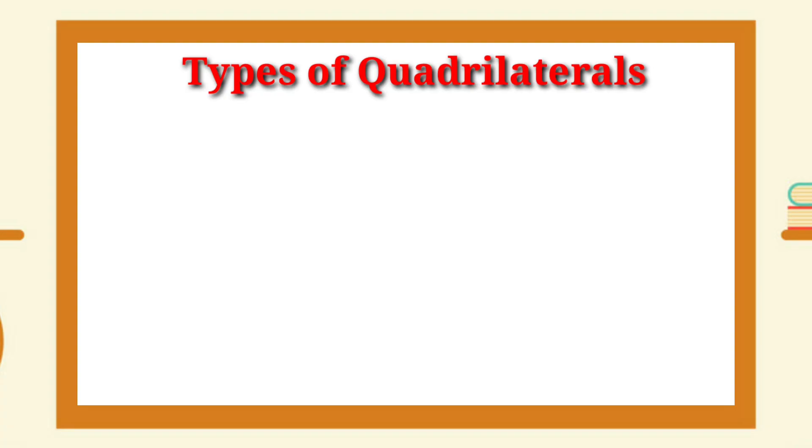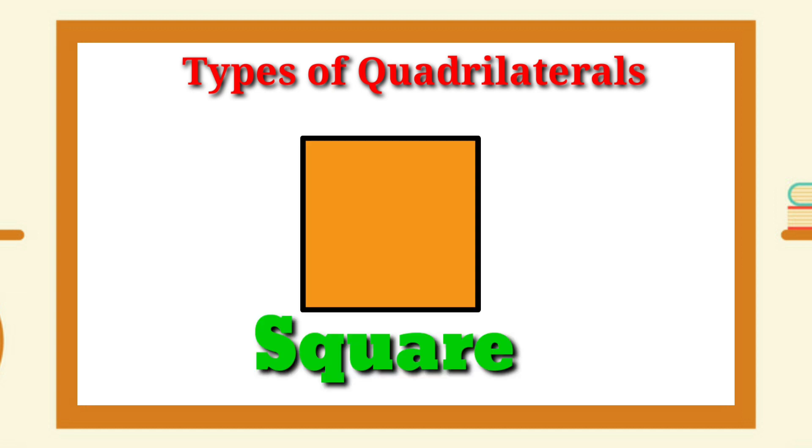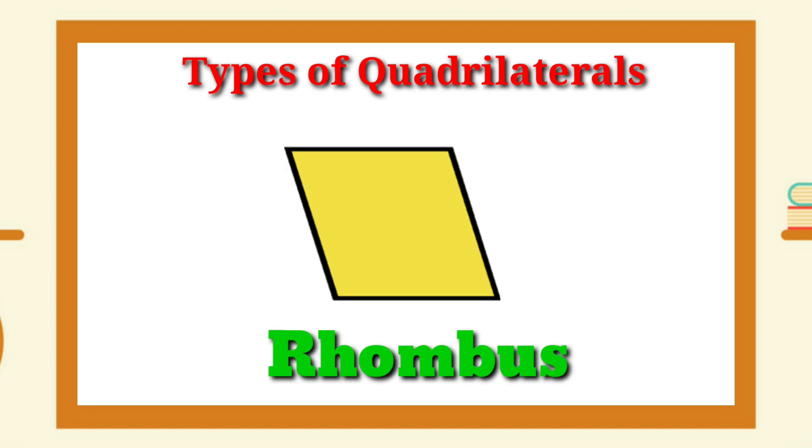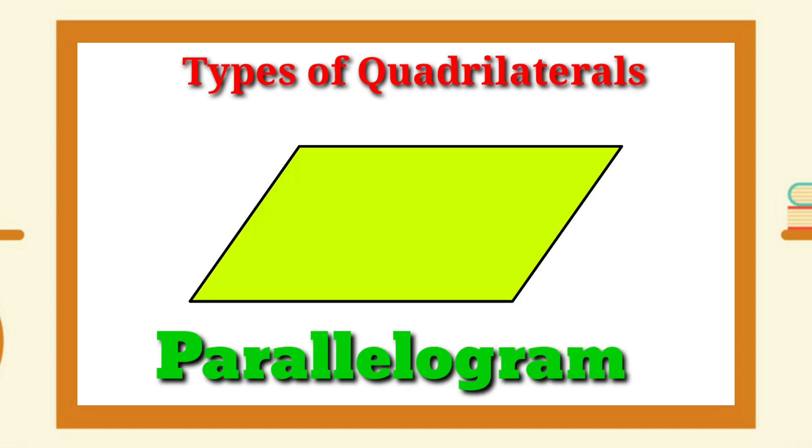The types of quadrilaterals are square, rectangle, rhombus, parallelogram,